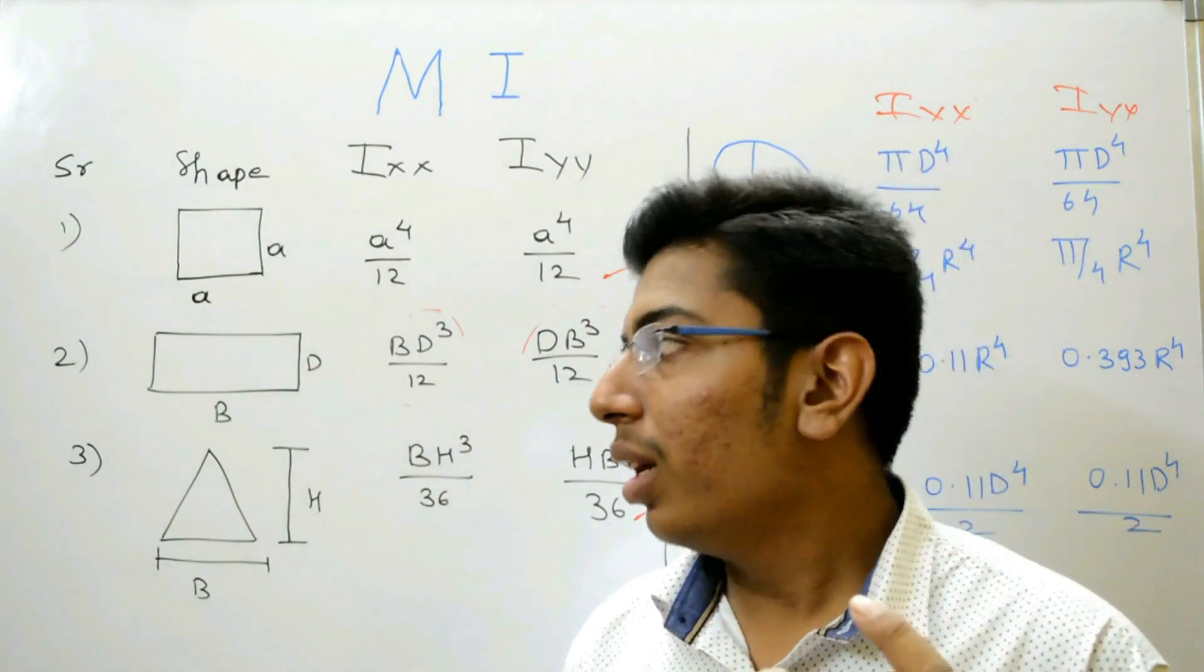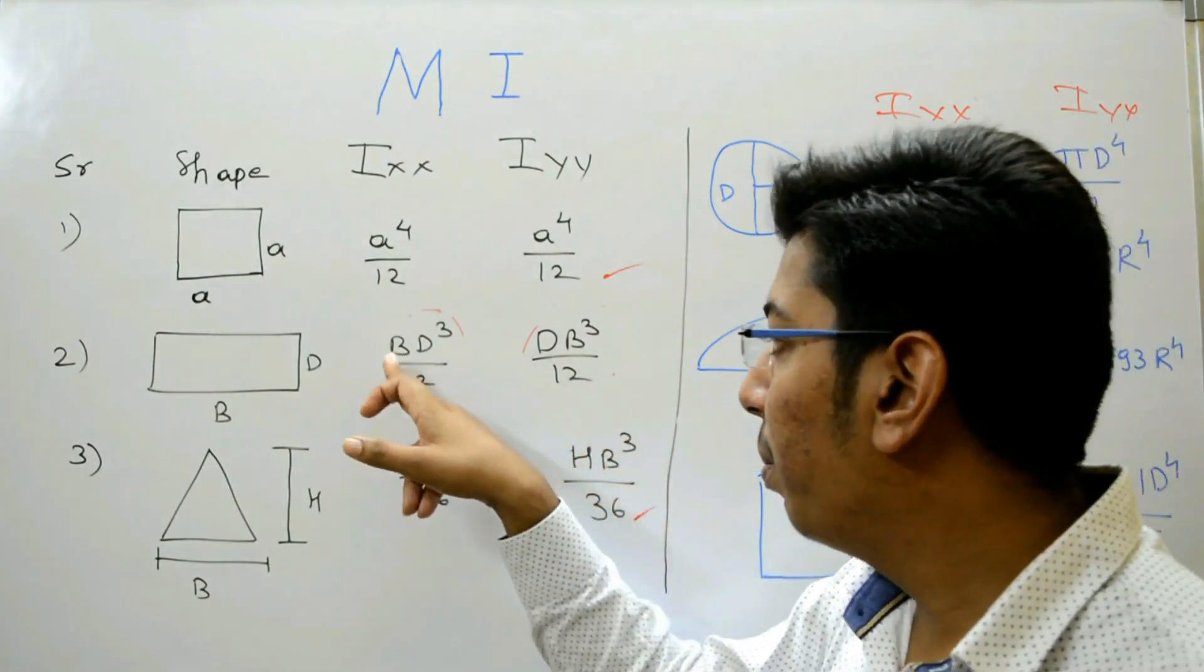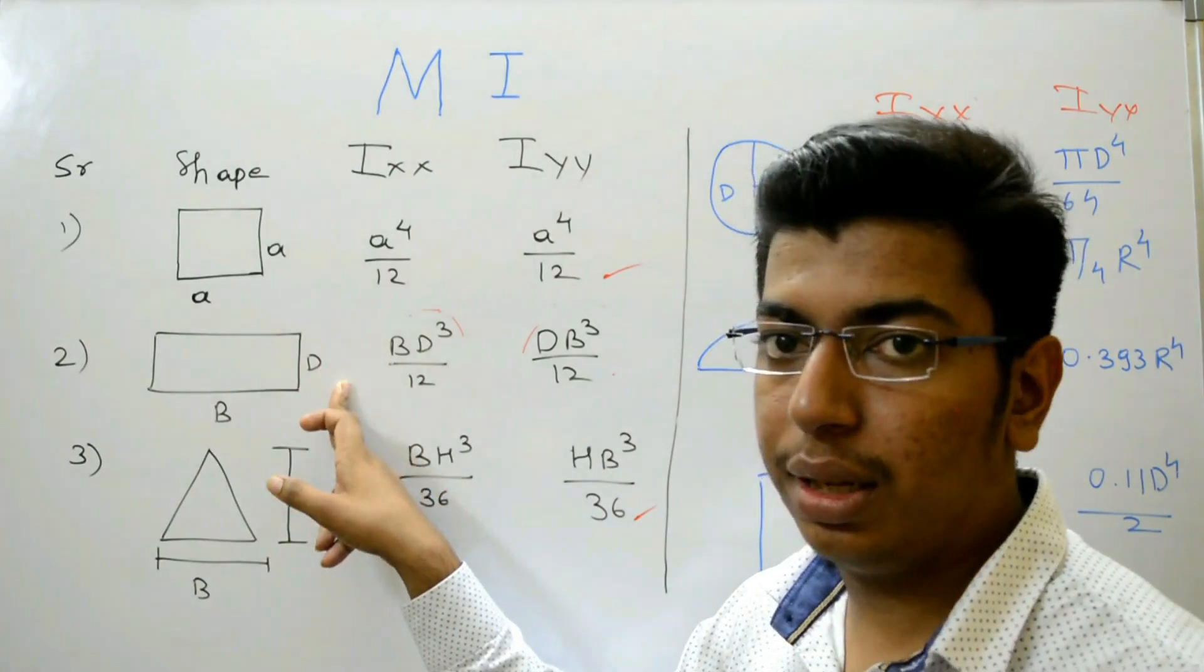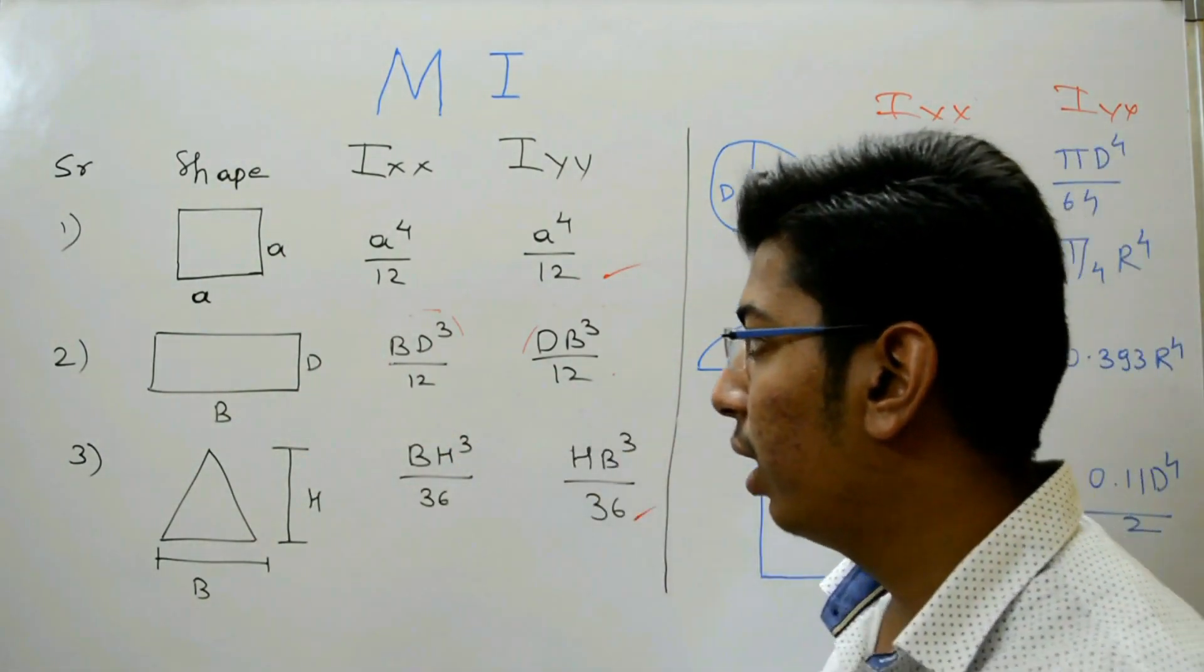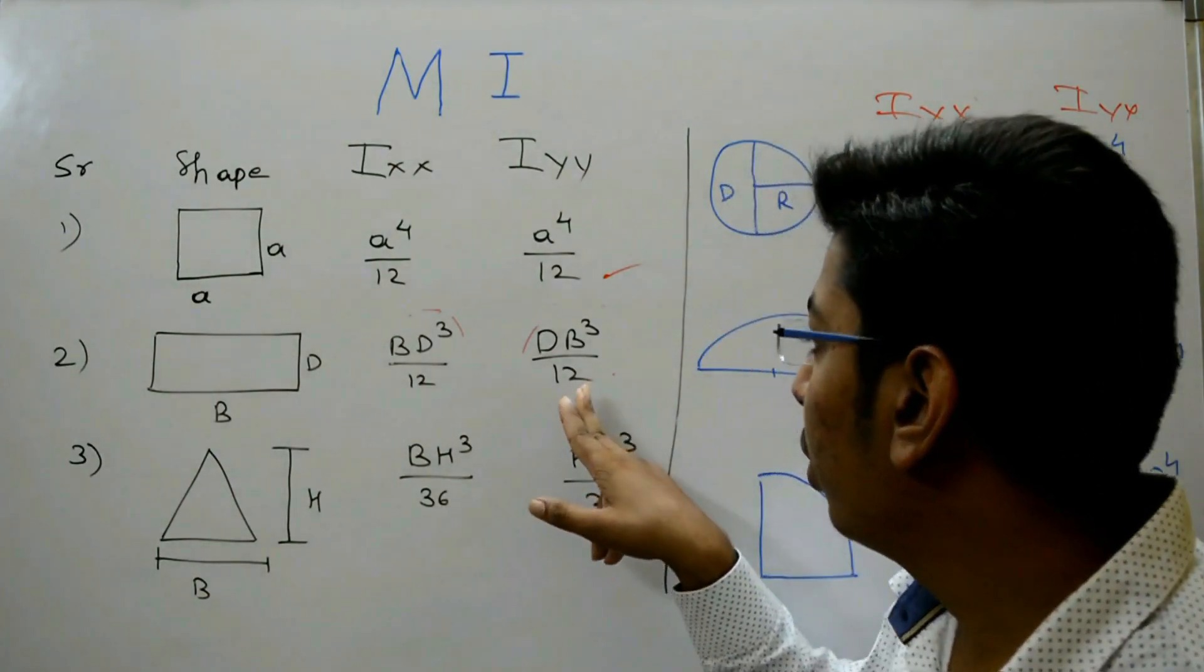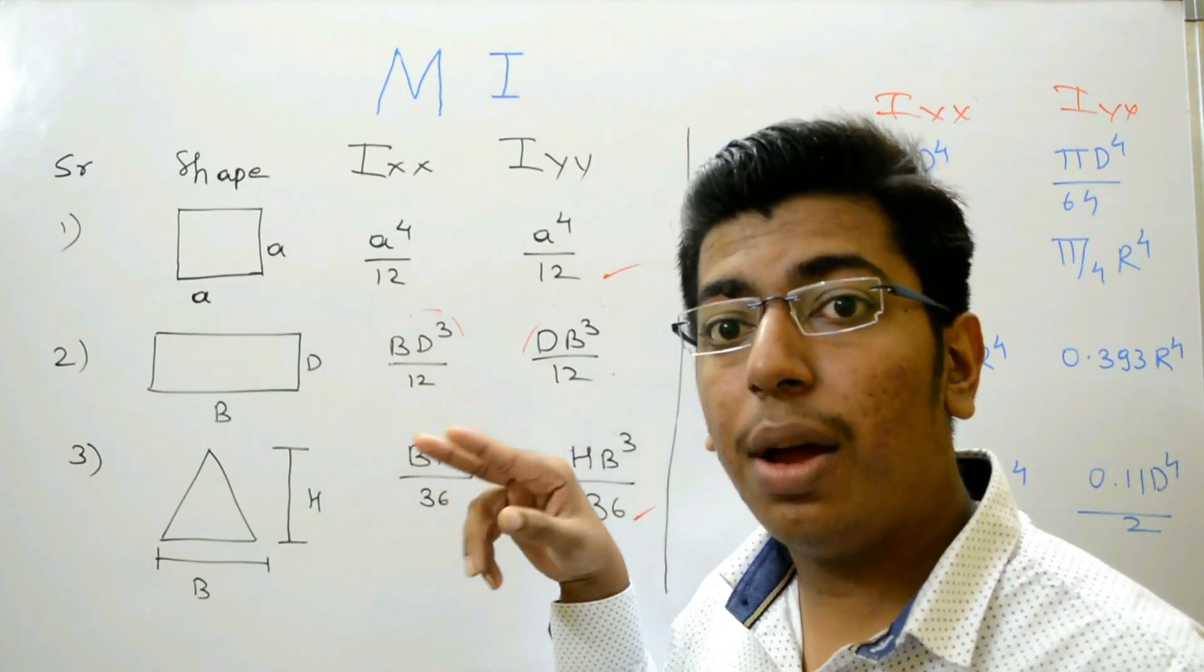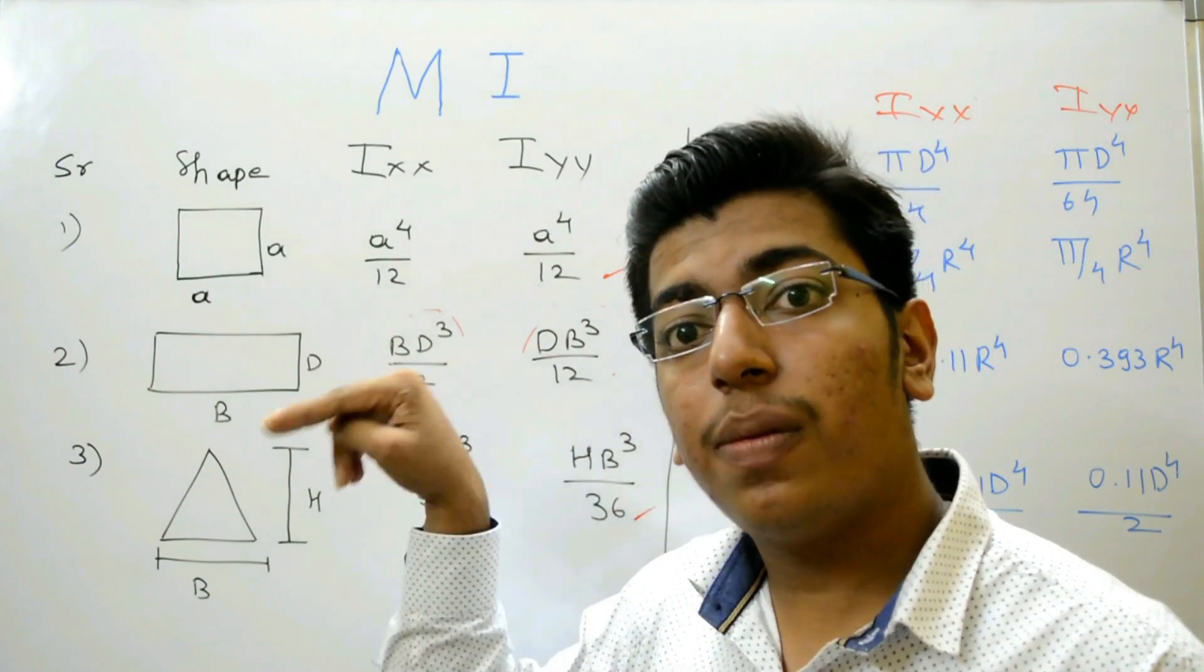This is very important here. Here B is base and D is height. Some people generally make mistake over here. They use the formula for Ixx instead of Iyy and use Iyy instead of Ixx. Observe formula carefully.